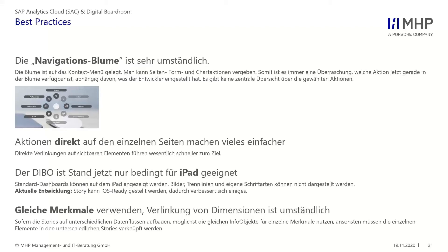Was wir auch festgestellt haben: gleiche Merkmale. Wenn man viele Datenquellen hat, hat man auch viele unterschiedliche Merkmale und Infoobjekte. Es ist schwer in der SAP, die Merkmale miteinander zu verknüpfen. Man kann im DIBO gleiche Merkmale miteinander verknüpfen und dann berichtsübergreifend filtern, aber das erhöht den Aufwand. Eine Produktion hat vielleicht eine andere Regionshierarchie als ein Vertrieb – die dann aufeinanderzukriegen ist kritisch. Technisch ist es natürlich möglich, man muss nur ein besonderes Augenmerk darauflegen.